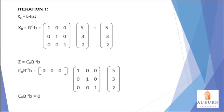We then calculate B-hat, or the current XB values in the program, by multiplying the inverse B matrix times the little b matrix. The current objective function value is then calculated by multiplying the cost coefficients from the basic variables times the inverse B matrix times the little b matrix. The value, as you can see, is zero.